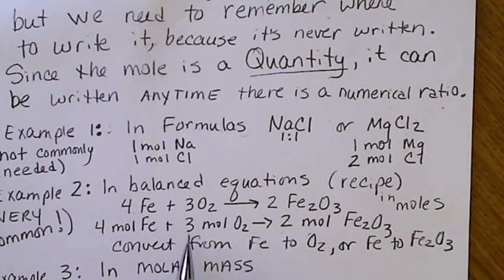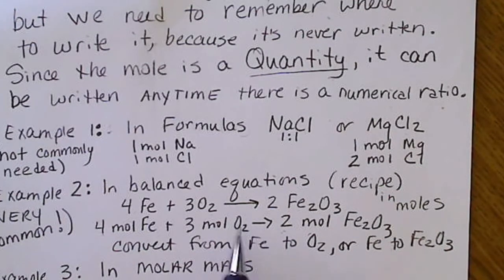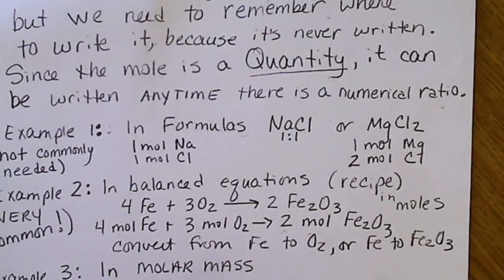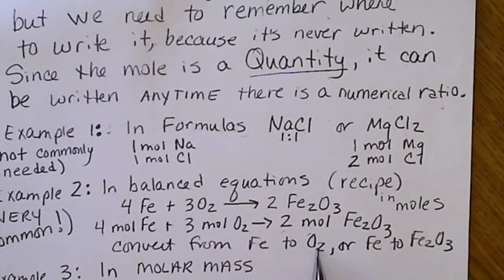So we'll have 2 moles, 1.5 moles, and 1 mole. And so we're going to ratio any two formulas together in order to obtain information about one item from another.